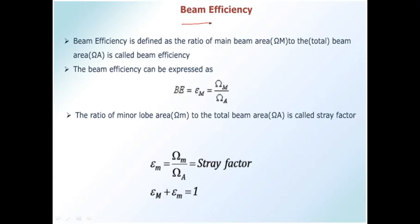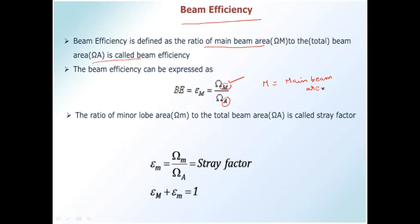Next is beam efficiency, which is a continuation of the beam area concept. Beam efficiency is defined as the ratio of main beam area to total beam area. Efficiency is simply a ratio — here it is the ratio of main beam area to total beam area, where main beam area is represented with capital Ω_M. We have two types of beams: the main beam and the minor beam. The main beam area is what we consider as the primary radiation.